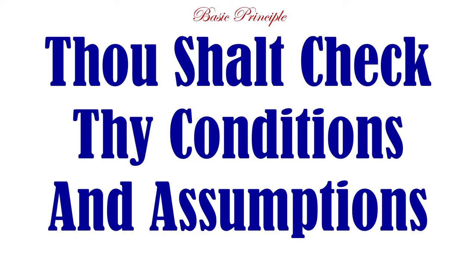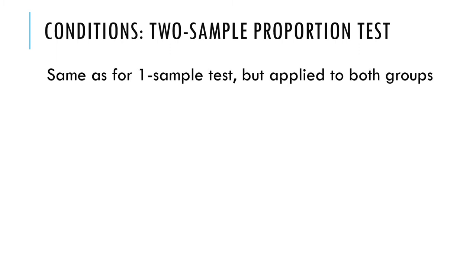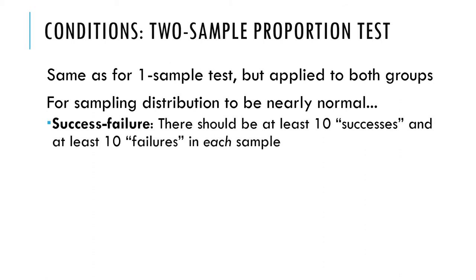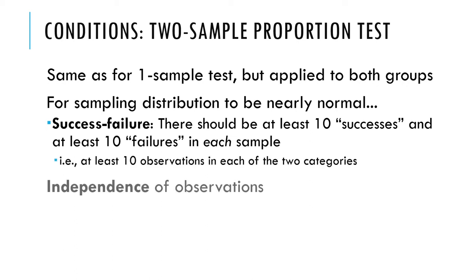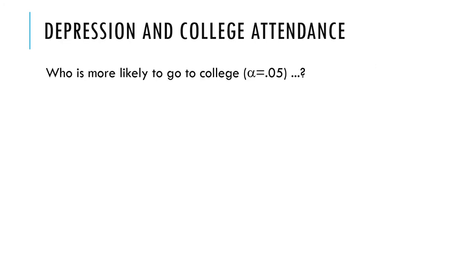Let's remember that first we always have to check assumptions. The conditions or assumptions for a two-sample proportion test are extremely similar to those for a one-sample proportion test, which in turn are very similar to checking assumptions and conditions for means. For the sampling distribution to be nearly normal, you need the success-failure condition to be true in both samples independently, and the independence condition needs to be true in both samples as well.